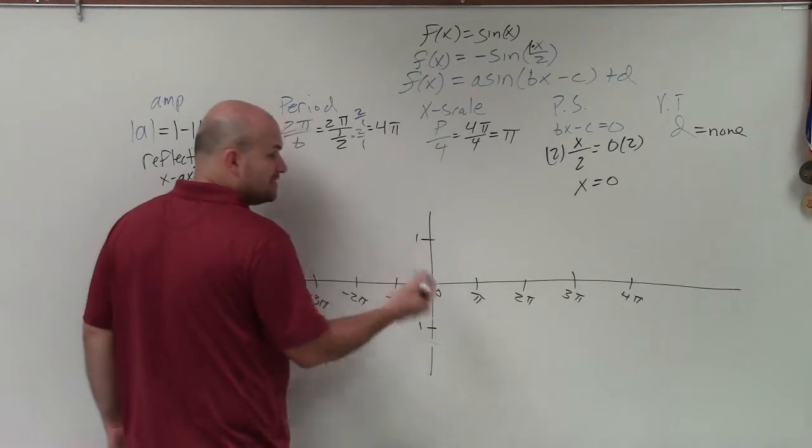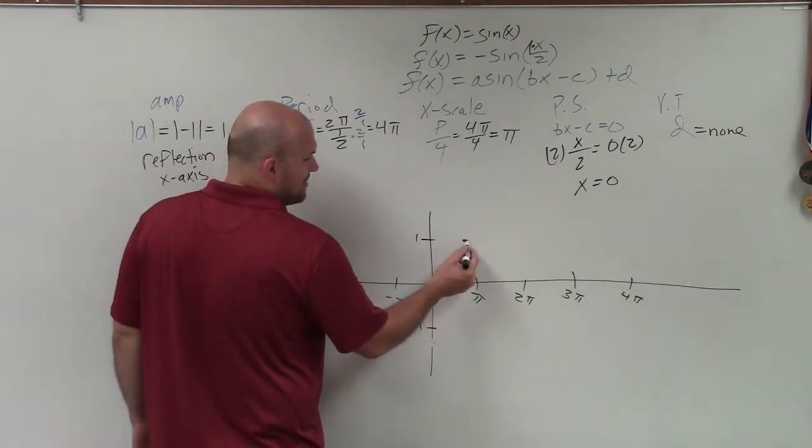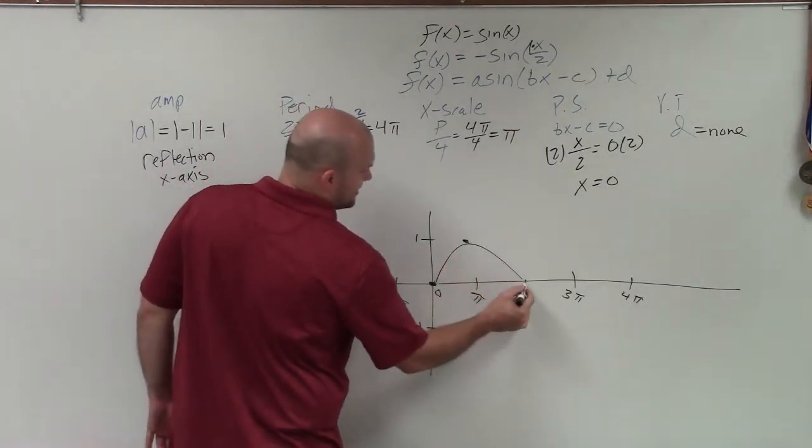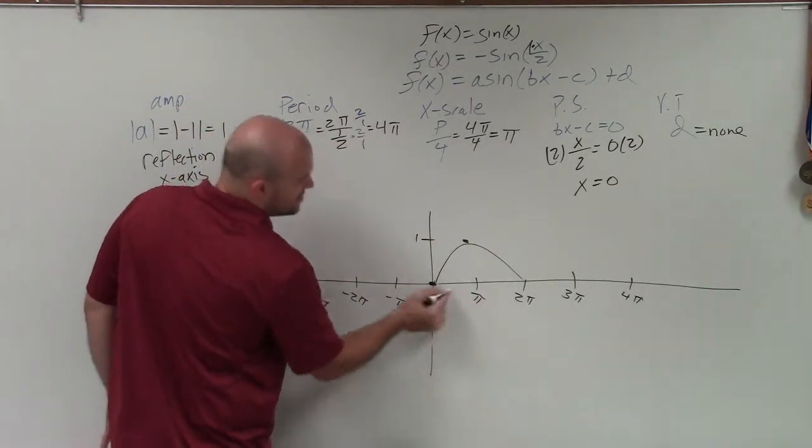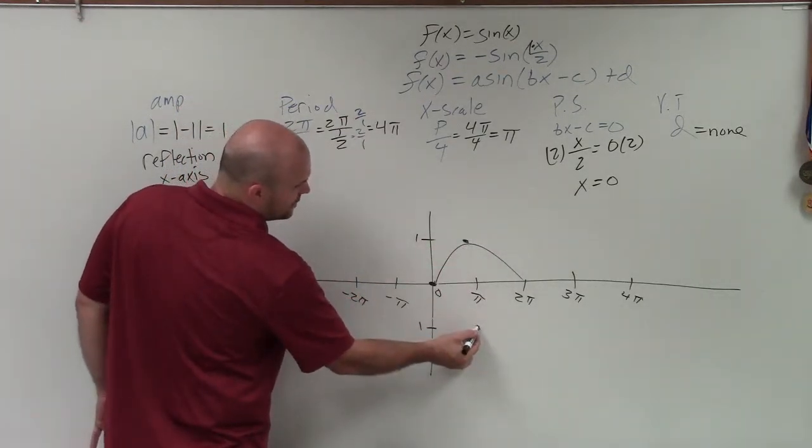All right, now remember, first of all, on the initial graph, without a reflection, I would go up to the maximum, right? It would look something like this. But remember, now we're taking this and we're reflecting it over. So instead of going up to the max, I'm now going to go to the min.